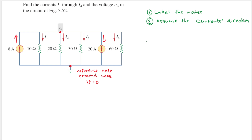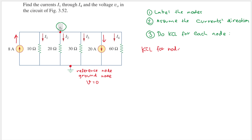Next, we apply KCL — Kirchhoff's Current Law — for each node. In this case, we only have one node, v0, so we only need to do KCL at v0. KCL states that the sum of the currents going in is equal to the sum of the currents going out.